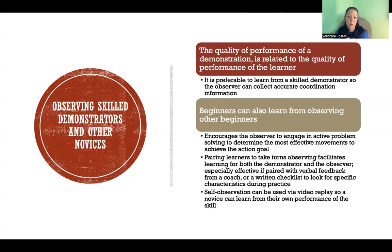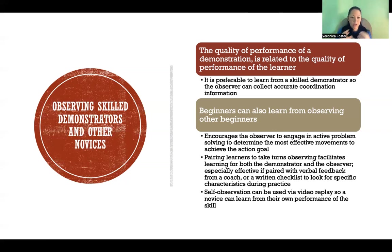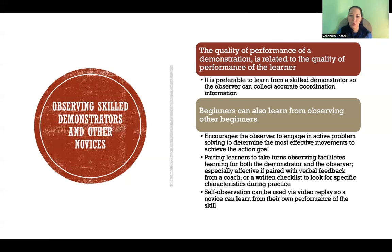In a learning environment, pairing two learners — whether two people in physical therapy working on a similar problem or two athletes on a team — where they take turns observing each other can be really useful. But there does need to be a coach, physical therapist, or someone providing guidance and helping them see what they should be looking for. They could have a written checklist of qualities or points to look for while observing each other, and then work together to problem solve how to meet the requirements of the skill.